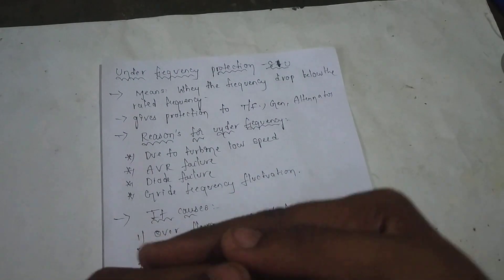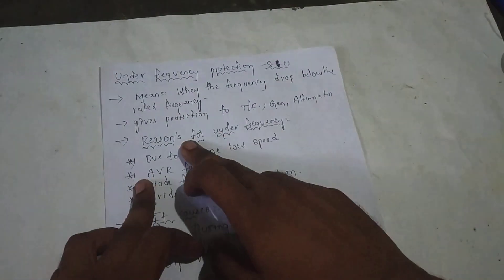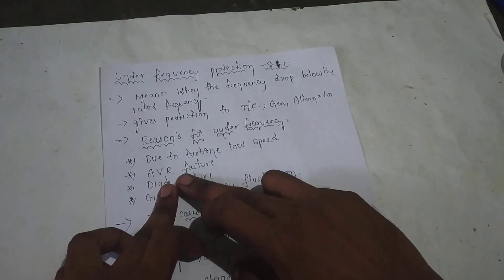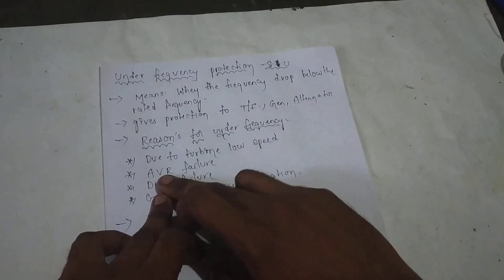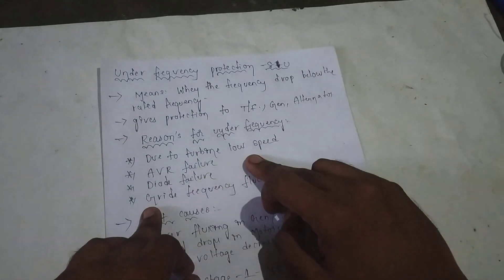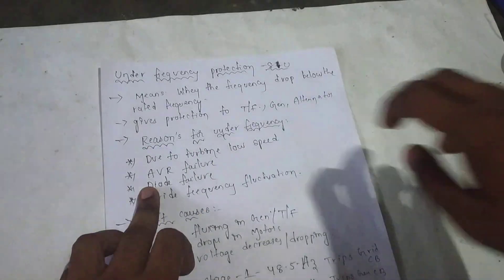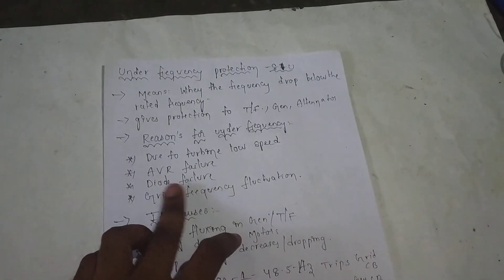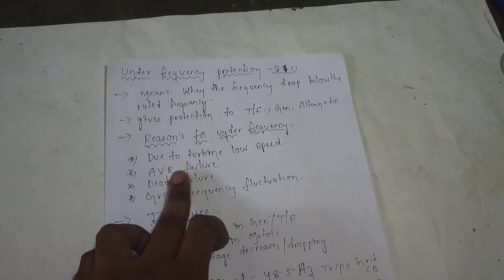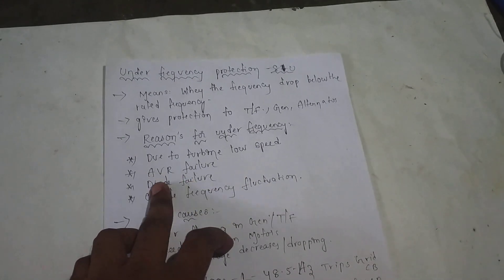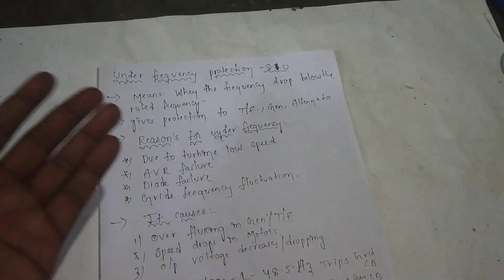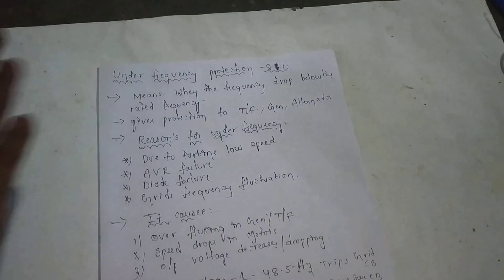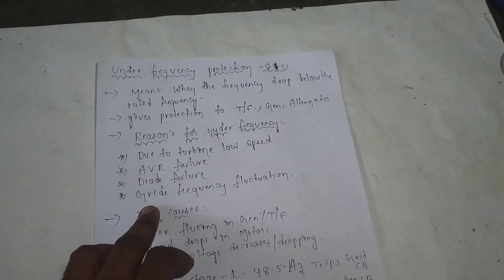The main reasons for Under Frequency: First, Alternators — the Turbine is at low speed. For Generators and Alternators, one cause of failure is Diode failure. The Diodes are in the Alternator's Rotating Rectifier.